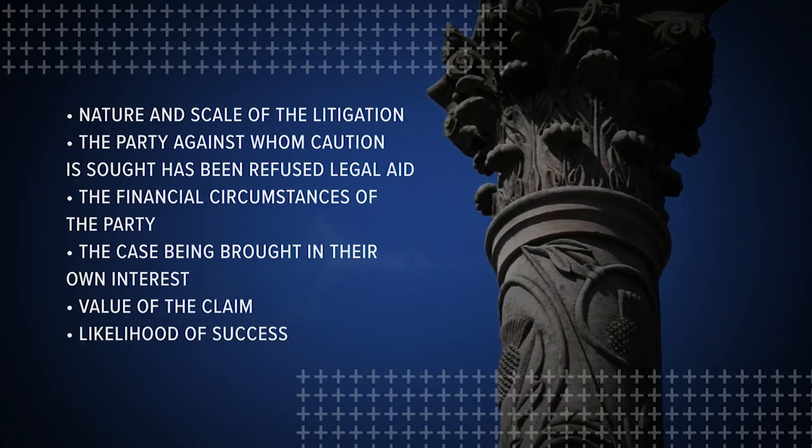If an order for cation or other forms of security is granted, the order will specify the period by which cation or security must be found. This can be done by lodging a sum of money with the accountant in court, or through what's called a bond of cation — that's usually a bond issued by an insurer. The court may also approve other methods of security or a combination of these methods.